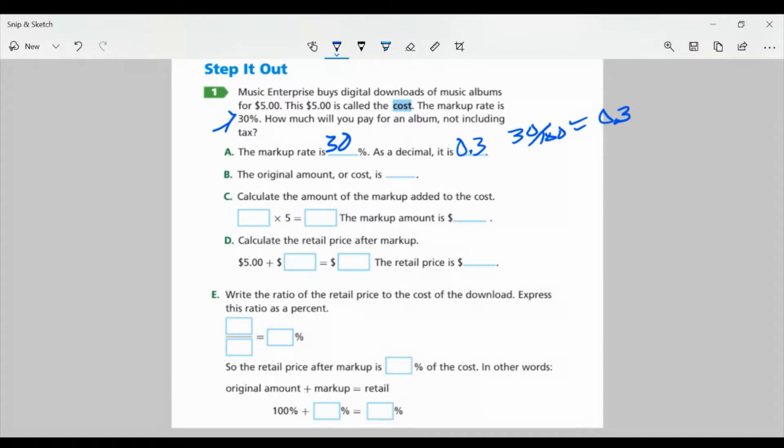The original amount or cost is $5. Part C, calculate the amount of the markup added to the cost. So I want to take 0.3 and multiply it to the cost, which was $5. Now when we multiply that, we get 1.5. So the markup amount is $1.50.